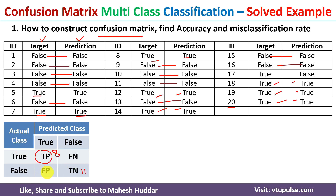Now for false positive: the actual class should be false but the predicted class should be true. Going through the data, we have no examples where the actual class is false and the predicted class is true. So false positive is equivalent to 0.